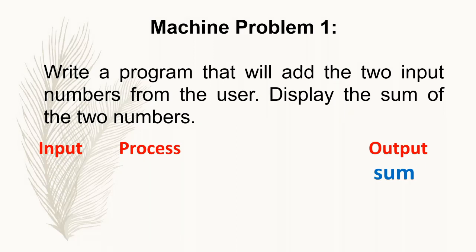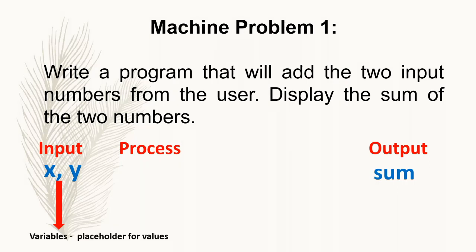How do we represent the input? We will use x and y. So what are x and y, and what is sum? In programming, x, y, and sum are called variables. Variables are placeholders for values. As stated in the problem, there are two input numbers, so we need to reserve two variables — we can name them x and y. Later on, we will learn about valid variable names, but for now, let's use x and y.